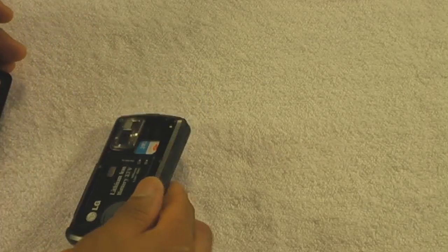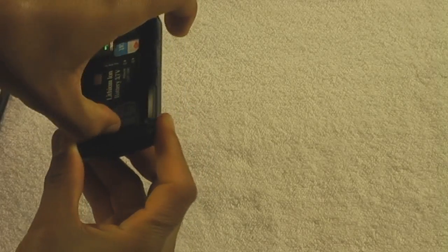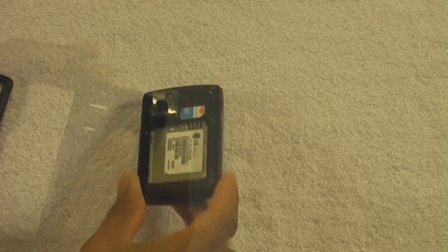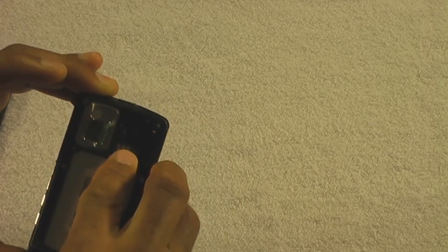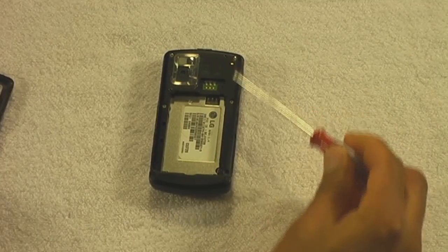First, take the back plate off of the phone by pressing down on the button on top. Then take the battery out by pushing up on the battery itself. Make sure you have a thumbnail when you do this. Then remove the SIM card. If you can't do these three steps, do not continue.